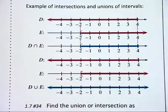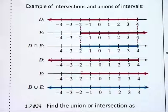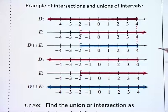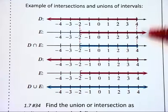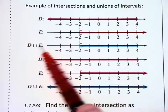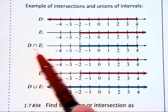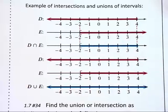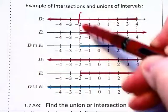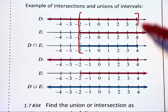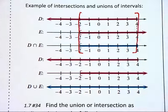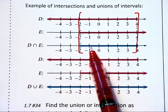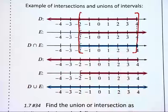This next illustration shows how we can depict unions and intersections graphically. Here we have sets D and E, and we want to find their intersection. Their intersection is where the two overlap, and both of these sets overlap between negative two and four inclusive. That's why this third number line has the region between and including the endpoints of negative two and four drawn out.